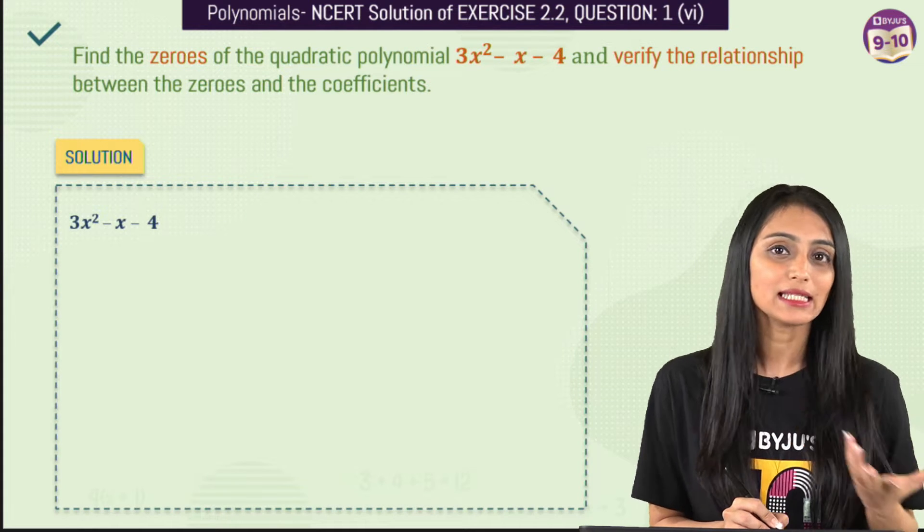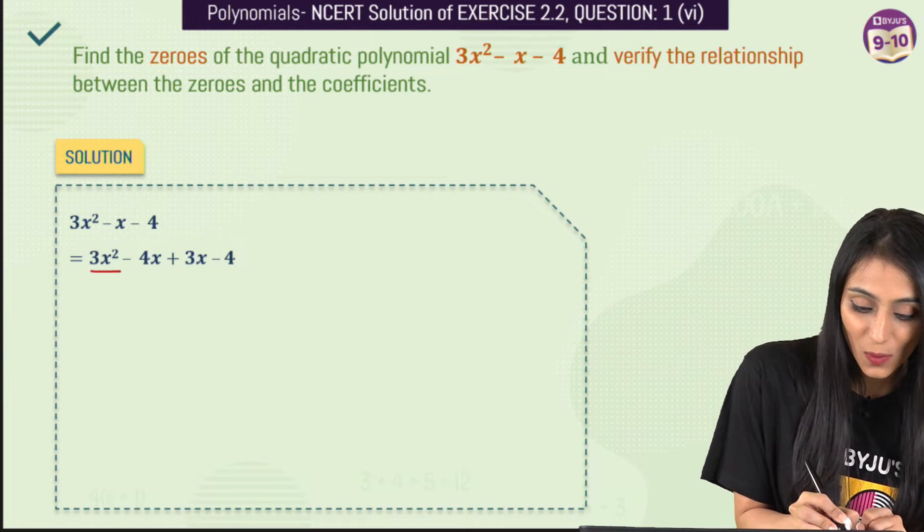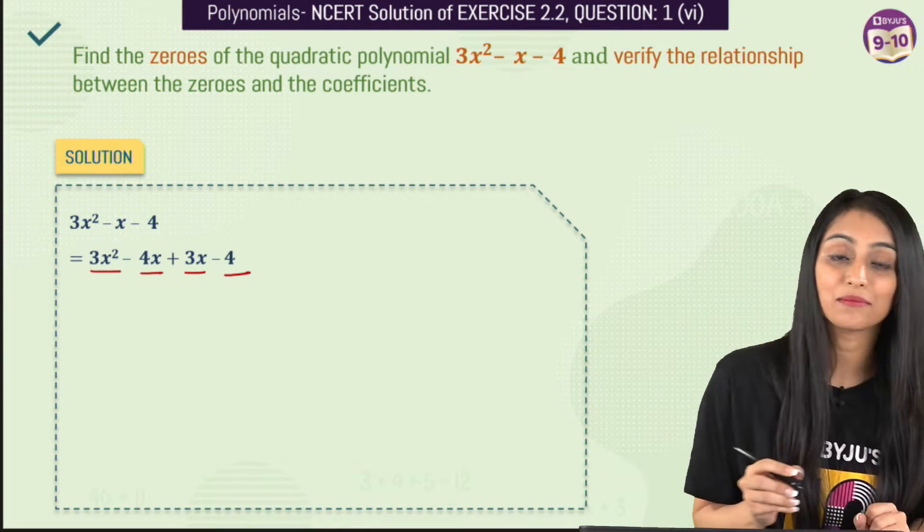Finding the zeros is very simple. All we have to do is middle term splitting here. So this could be done as 3x² - 4x + 3x - 4.